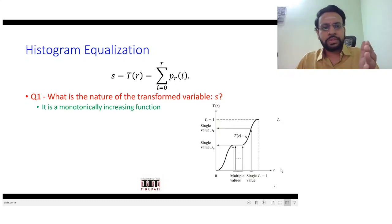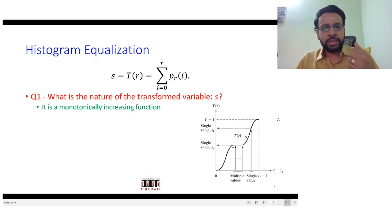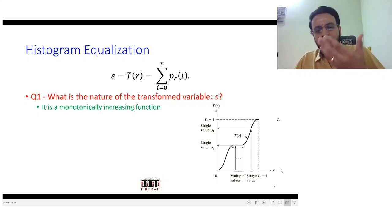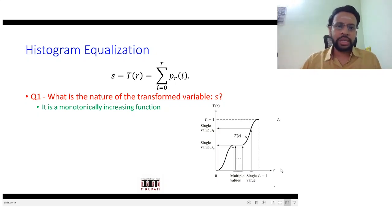So what would be the nature of this transformed variable s? As we discussed in that zoom session, this variable would be a monotonically increasing function, which means we know for sure that for each r there is a unique mapping or transformation to s. But in case you want to find out an inverse transform for s, that will not be unique.